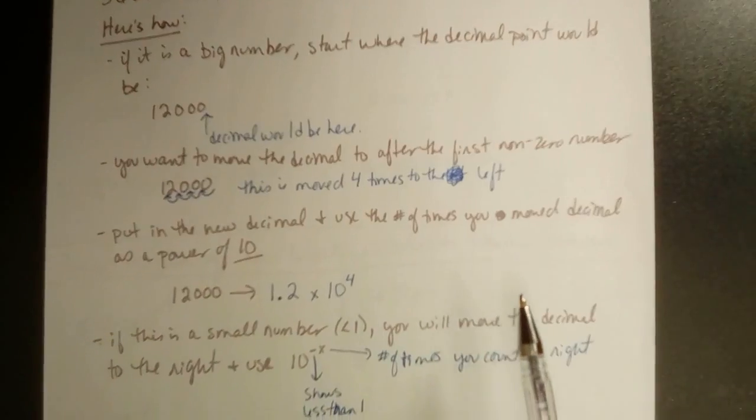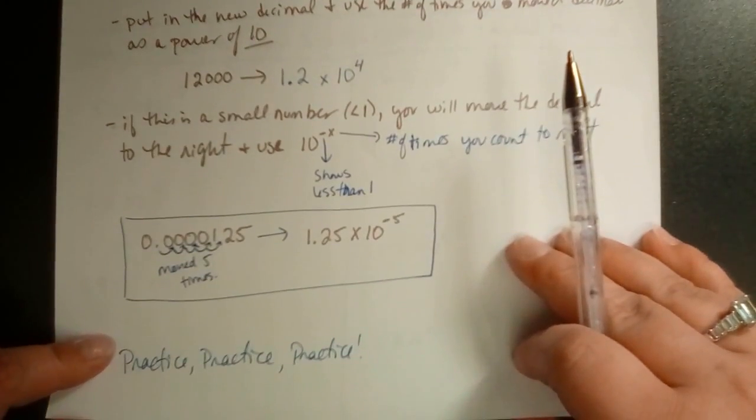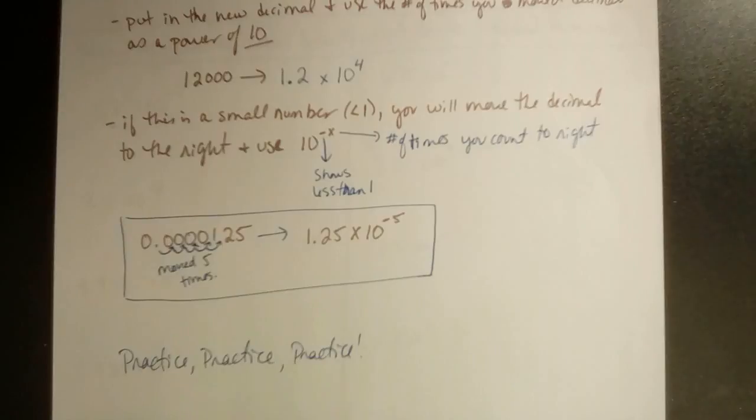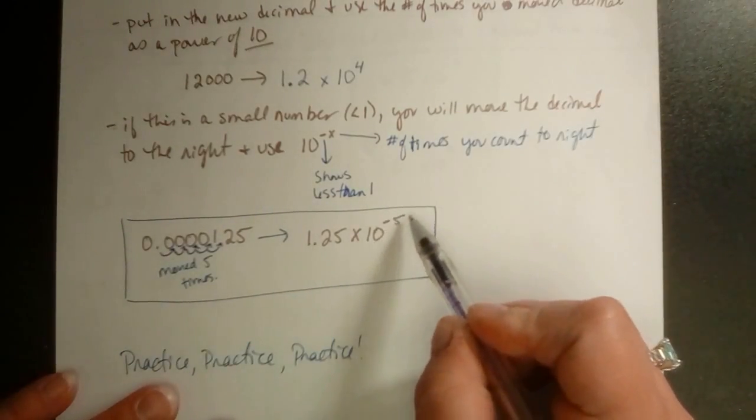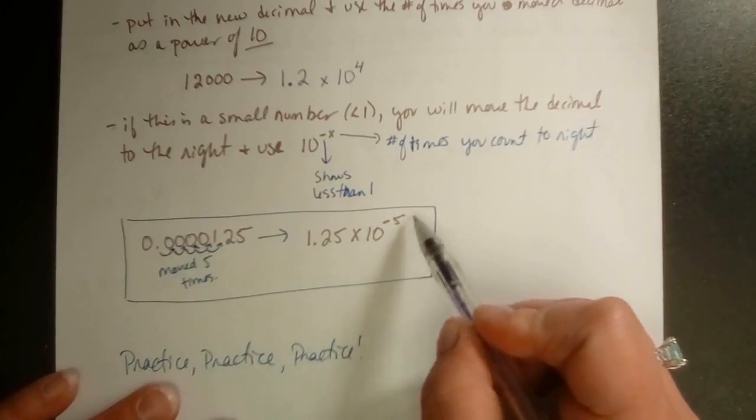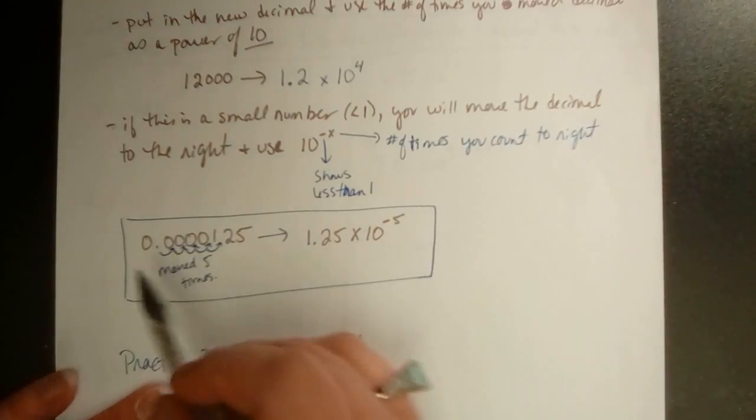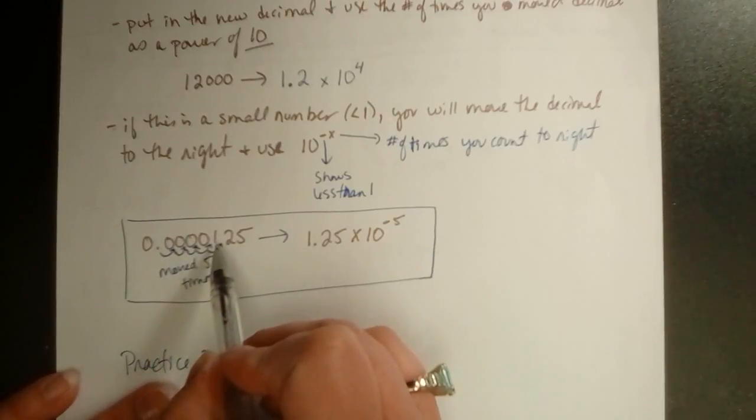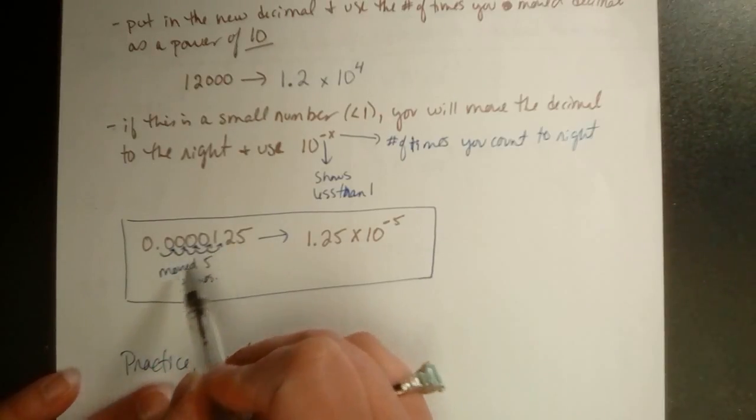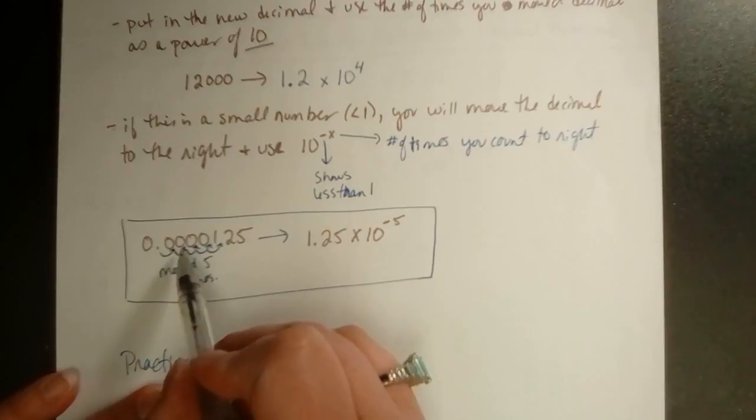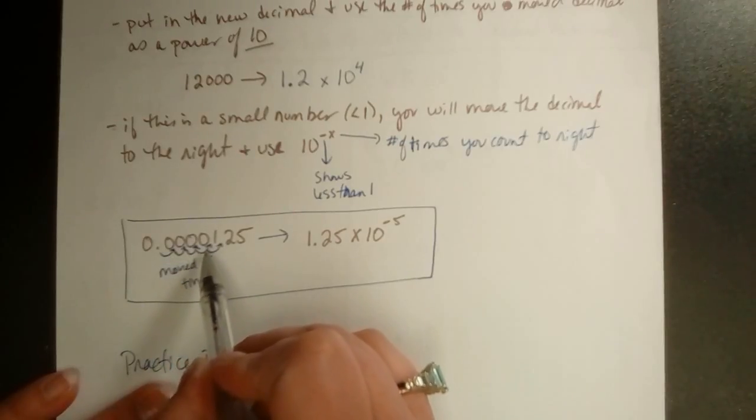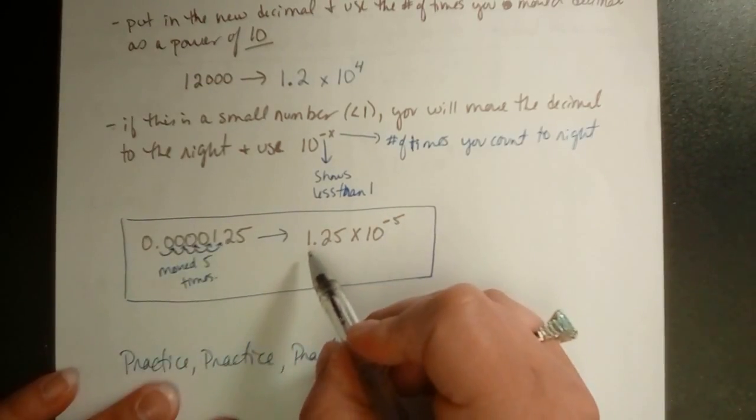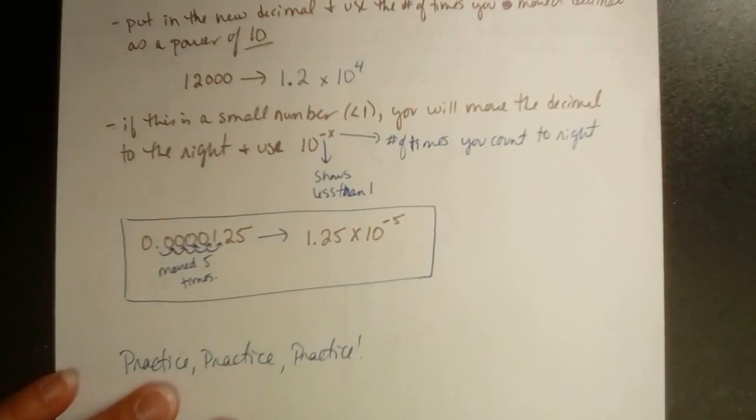If you have a very small number on the other hand, you would move it to the right and that's going to be reflective of having a negative number up here. So, here we're going to move this decimal to where it's after that one. 1, 2, 3, 4, 5. 1.25 times 10 to the negative 5th.